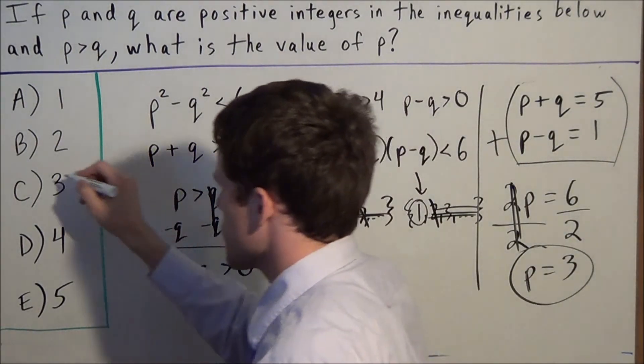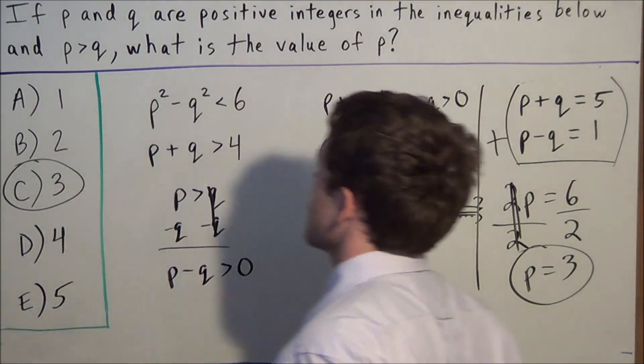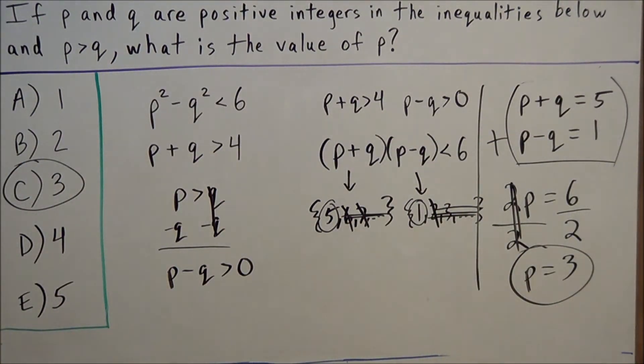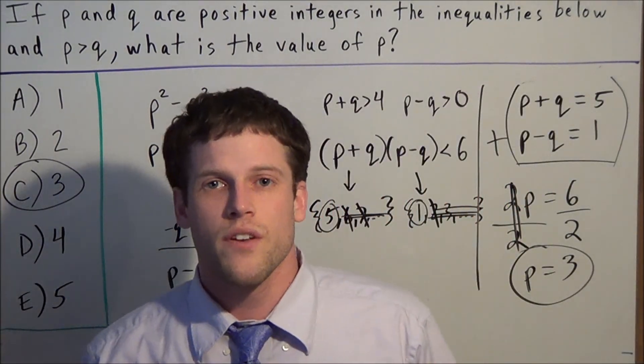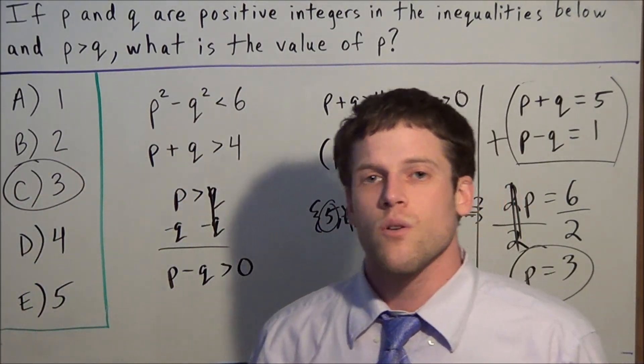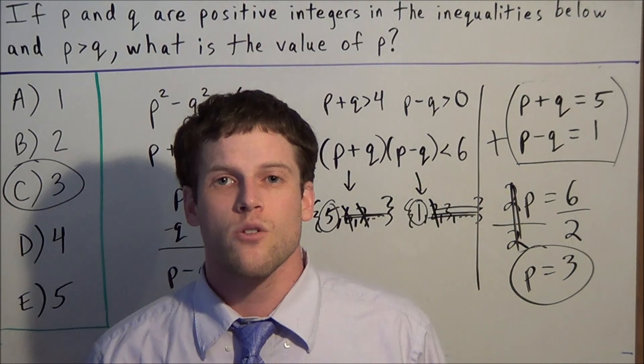So our final answer is choice C: p = 3. This concludes this video on a system of inequalities. Thank you all for watching, and I hope this was helpful.